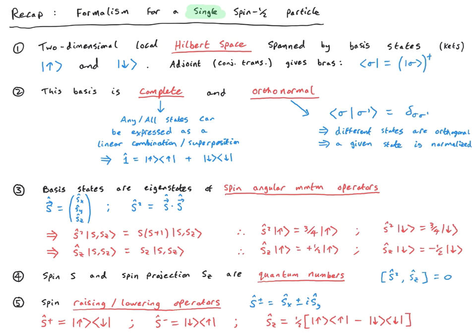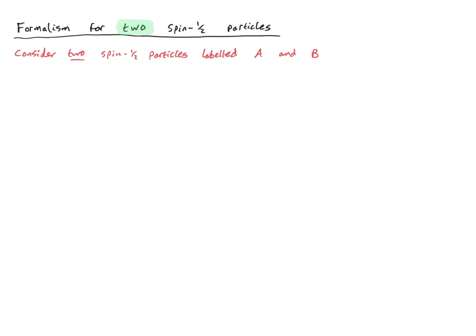So what I've summarized is all the formalism we need for a single spin-half particle. What we'll do in the rest of the lecture is generalize this to two spin-half particles. We'll go through this in detail, but the structure we set up will be easily generalizable to many-particle systems — which is of course the point of this course. So let's now consider two spin-half particles labeled a and b.